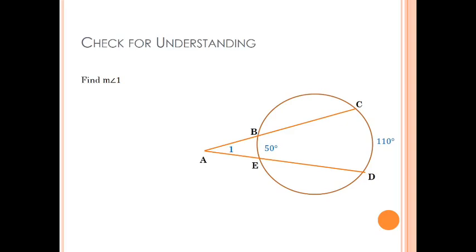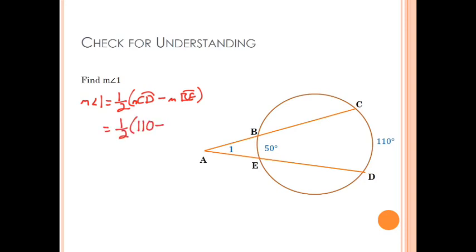Let's do a quick check for understanding. According to our theorem, the measure of angle one equals one-half the measure of arc CD minus the measure of arc BE. Filling in the values, that's one-half of 110 minus 50, or one-half of 60, which is 30 degrees.